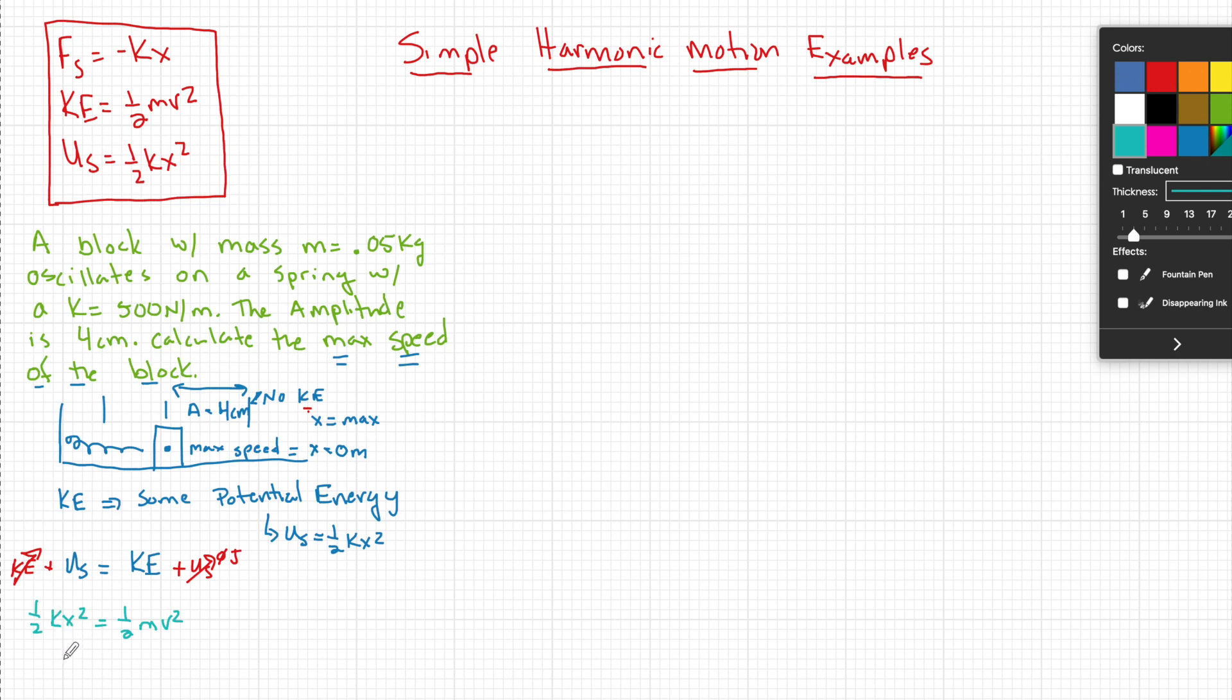I can then substitute in, I can multiply both sides by two and get rid of that one half. That makes life easy. So what I'm going to do now is I'm going to say that K is 500 newton meters X, which has to be in meters is 0.04 meters squared. That's going to be equal to M the mass of the block 0.05 kilograms times V squared. Do not forget the V. Then when we do some work here, some math work, we find out that V is going to be equal to four meters per second.